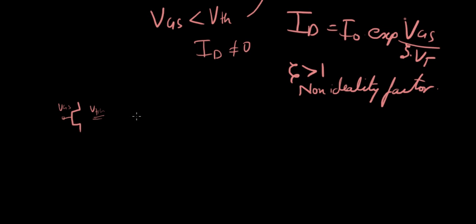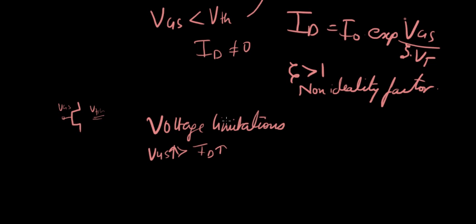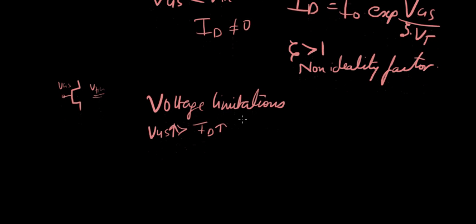And I thought I'd also mention voltage limitations on a MOSFET. We know that increasing VGS gives us a lot of current, but you've got to be very careful because once you increase it over a certain extent, for example if you have very large gate-to-source voltage,